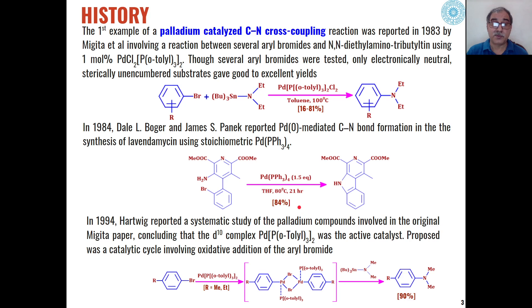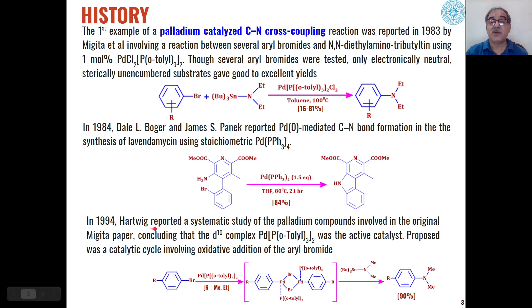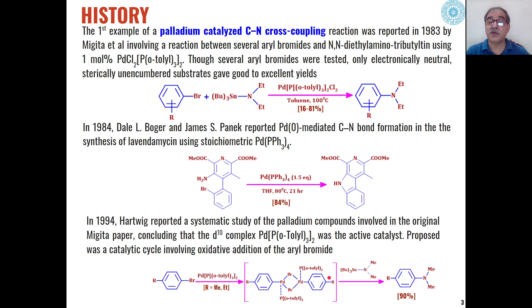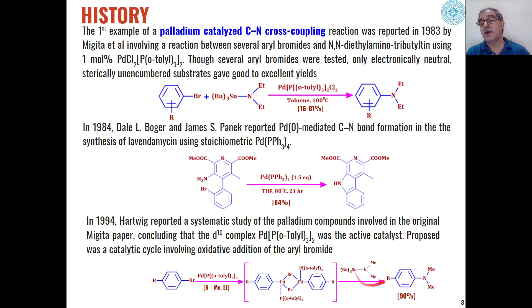The product was formed in 84% yield. After these two examples, there was a gap of about 10 years, and in 1994, Hartwig systematically reported the mechanism of this reaction — how aryl halides react in presence of palladium catalyst with amines to give products with formation of a new carbon-nitrogen bond. According to him, an intermediate was involved where the aryl halide first reacts with the palladium complex, then this intermediate reacts with the amine to give the products.